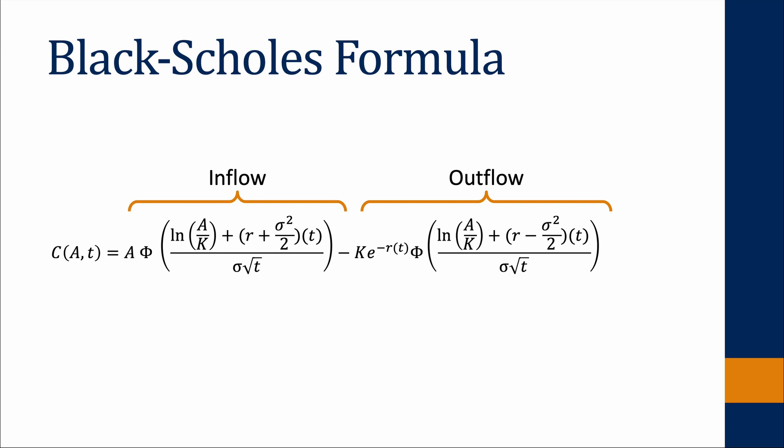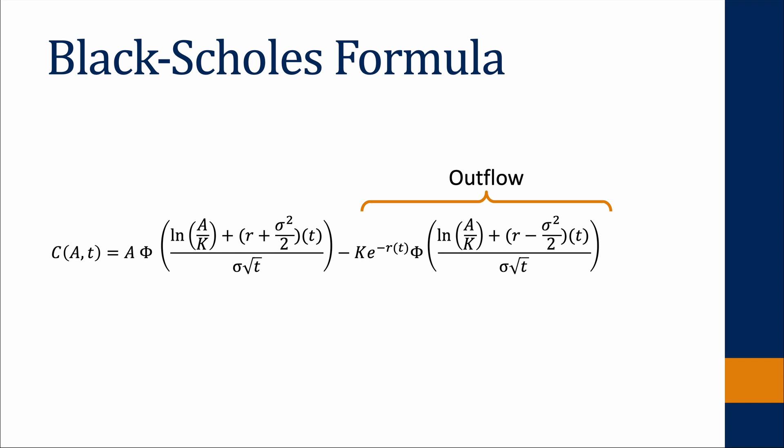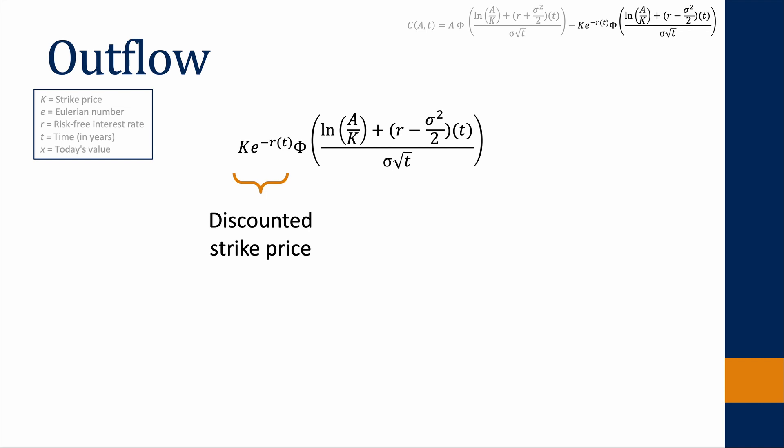At first, we want to focus on the second part of the formula. The outflow represents the potential payment of the strike price. Since the strike price must be paid in the future, we need to discount the strike price to take the time value of money into consideration.